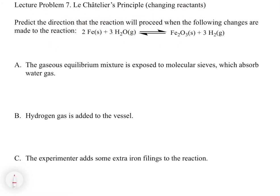In this example, we have iron solid plus water gas giving iron oxide plus H₂ gas. K equals the concentration of H₂ cubed divided by the concentration of H₂O cubed. Importantly, if we add or subtract iron from this reaction, that will have no effect on the equilibrium mixture — though iron and iron oxide must be present for the equilibrium to continue.